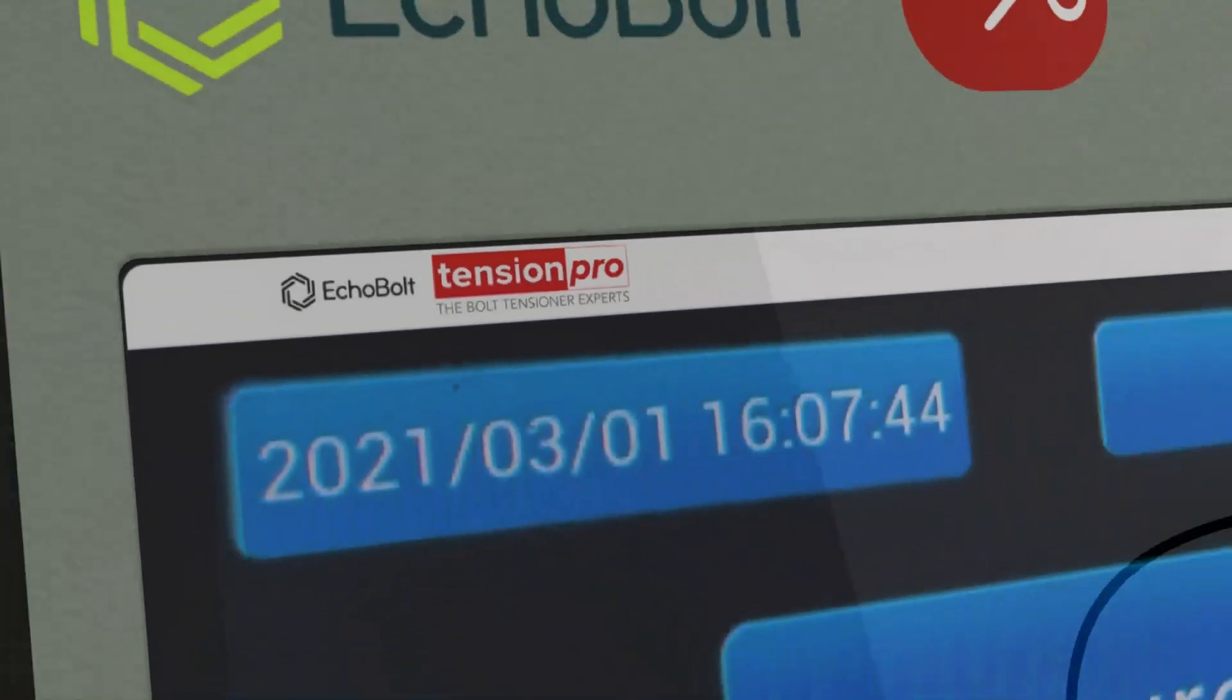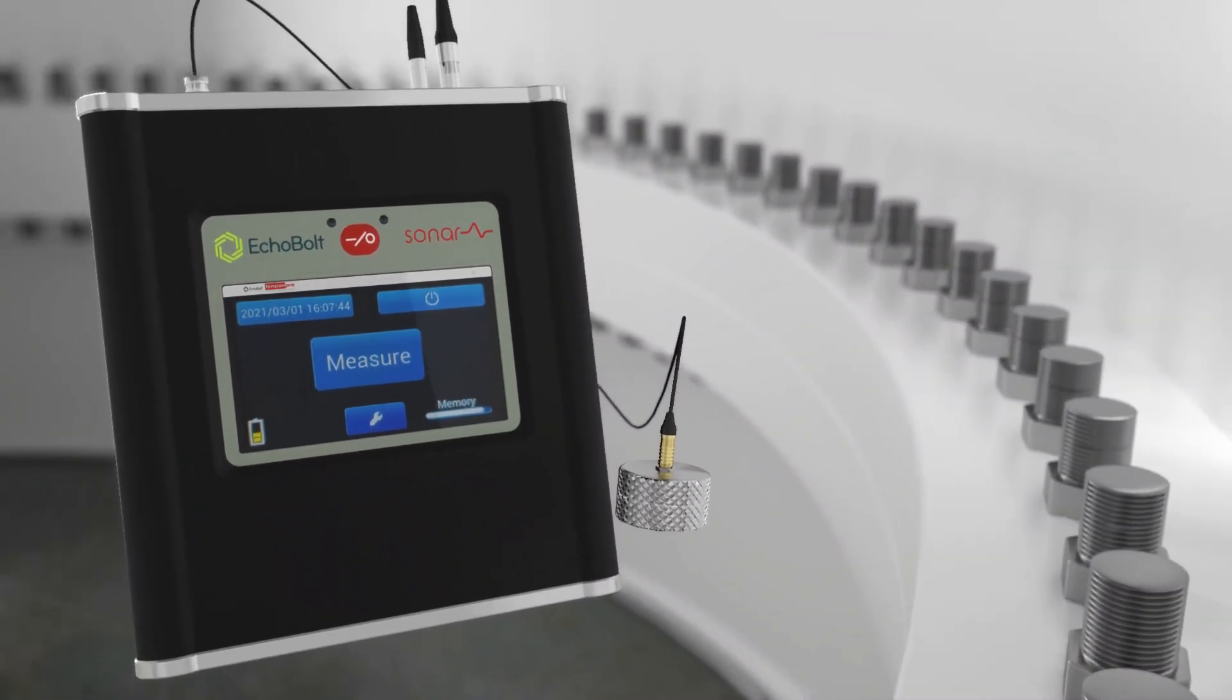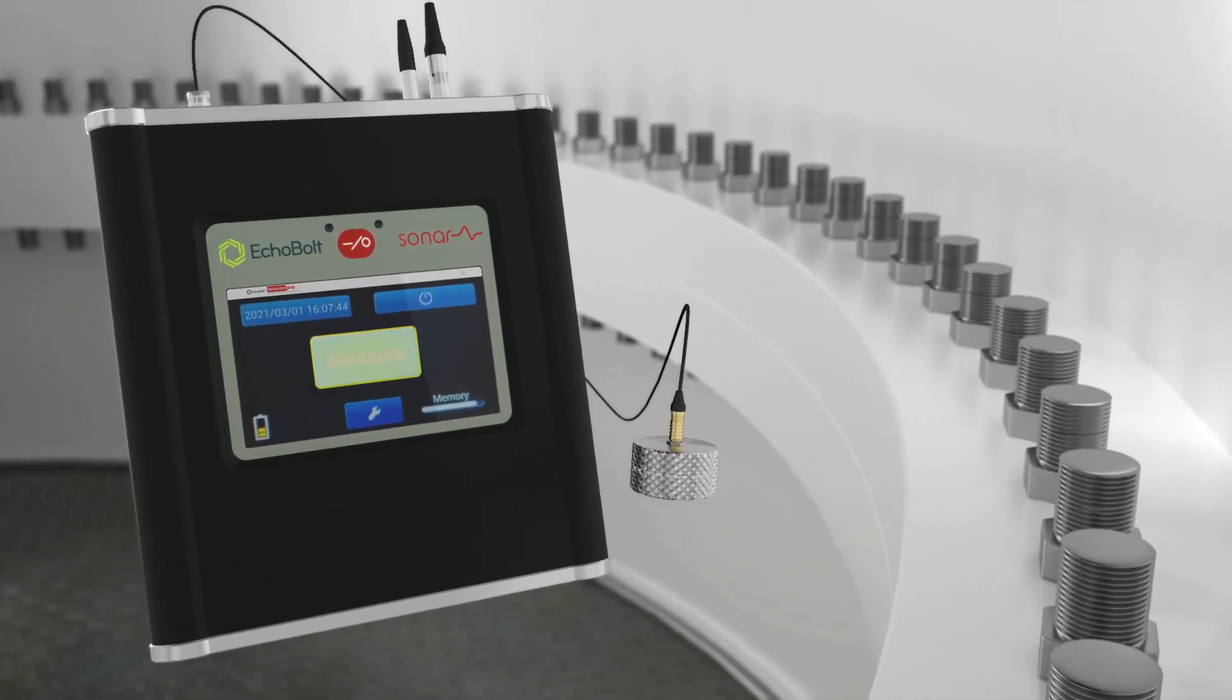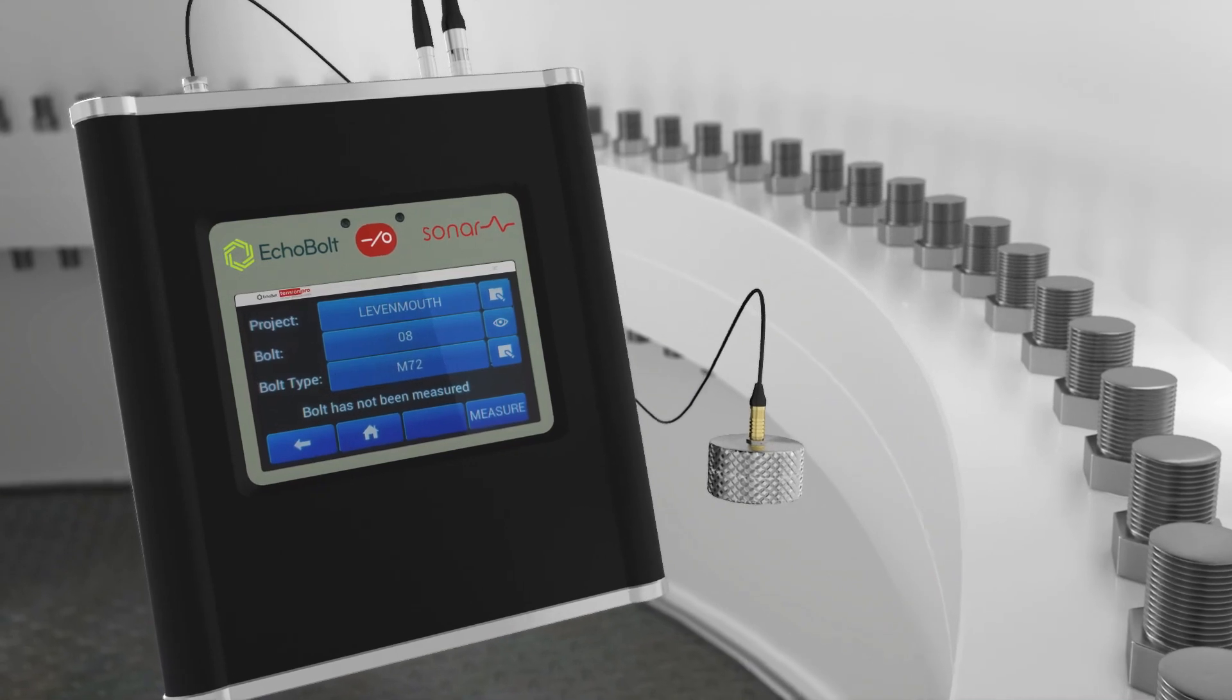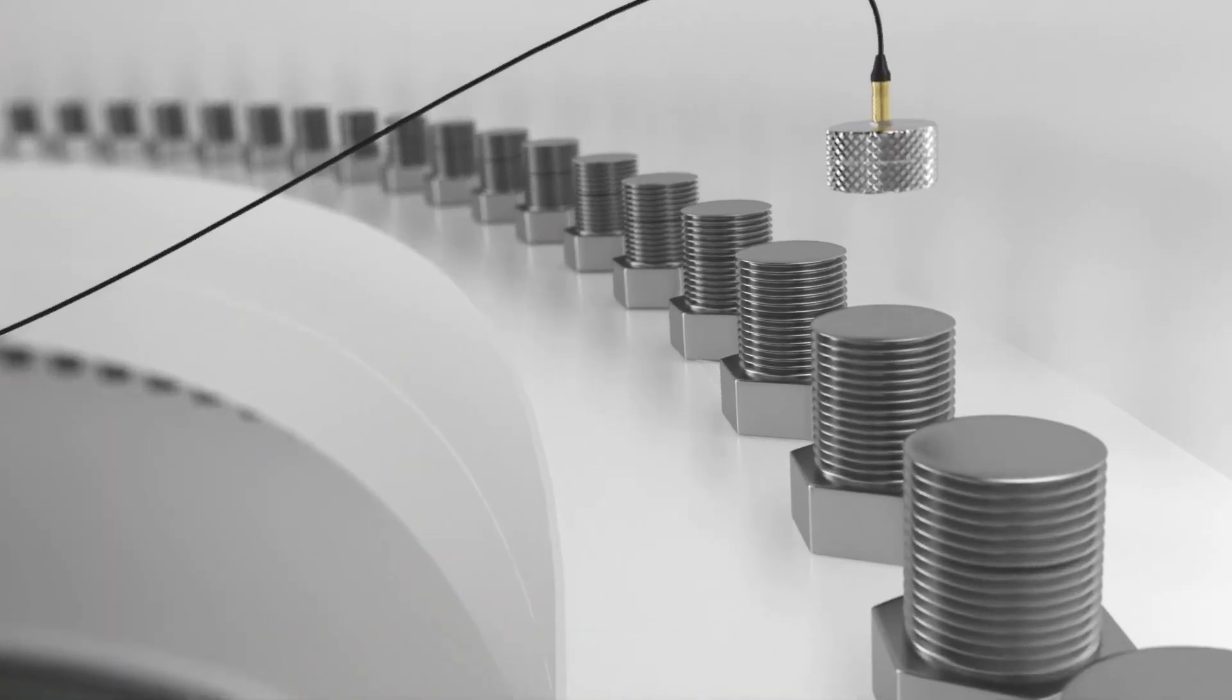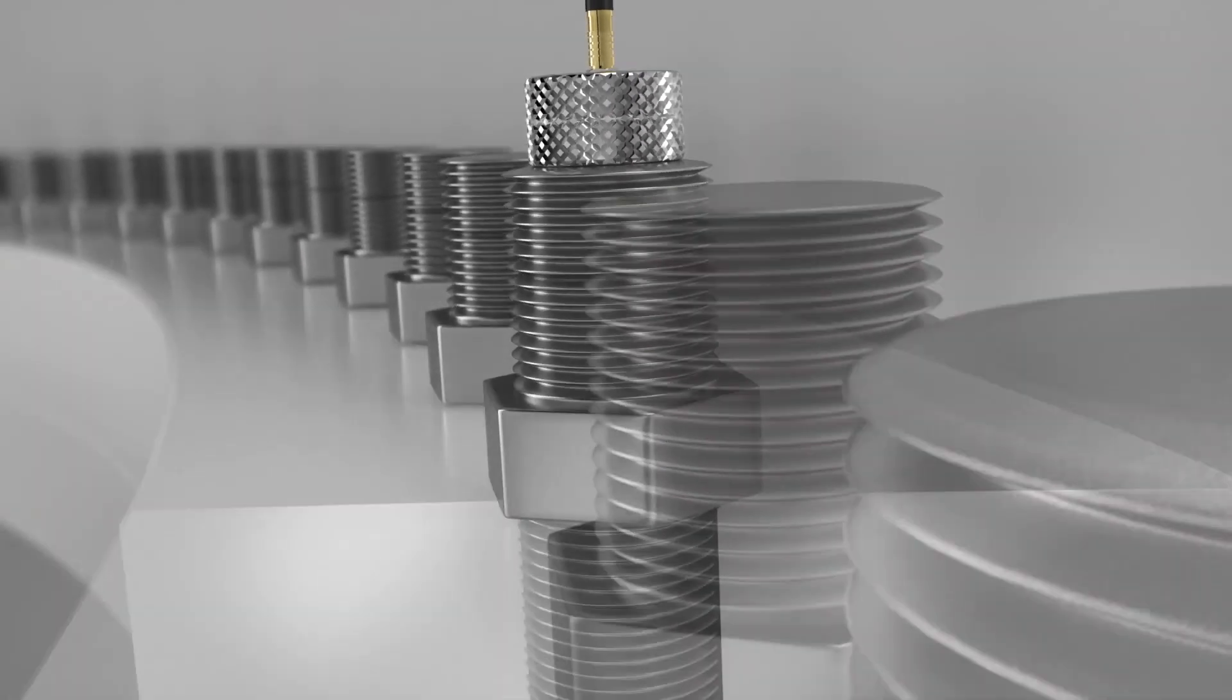As part of an Innovate UK funded project, Echobolt, a leading provider of fastener inspection services in the wind energy sector, has partnered with the Offshore Renewable Energy Catapult and GE Renewable Energy to develop an inspection system that uses ultrasonics to test the tension on the bolts.